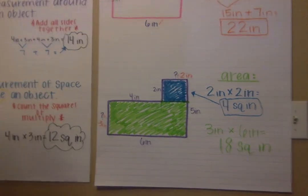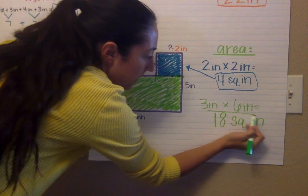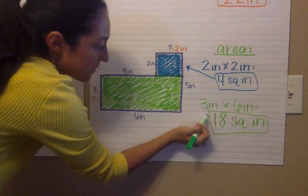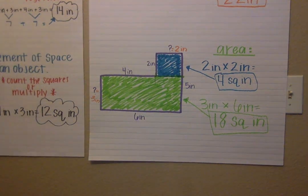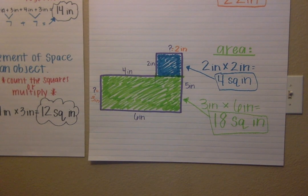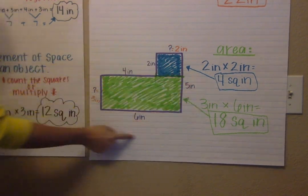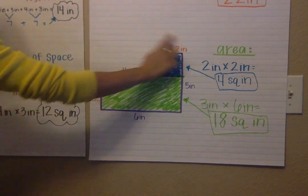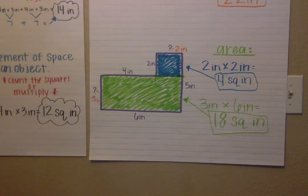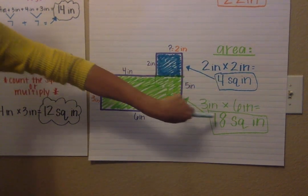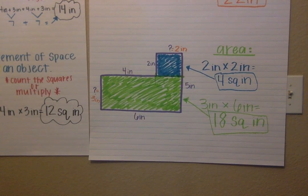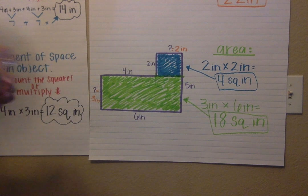So now this number represents the amount of squares that would fit here. Now the question was what is the area of this entire shape. So now I need to take the area of the blue area and the area of the green area and add them together to get my answer.